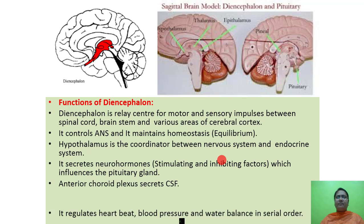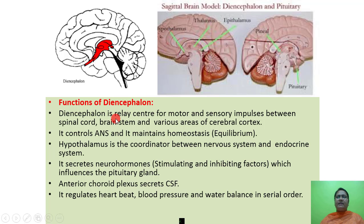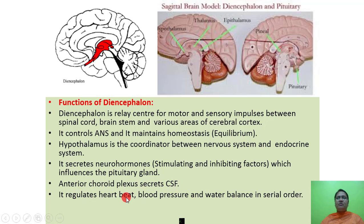Functions of the diencephalon: it is a relay center of motor and sensory impulses between the brain, spinal cord, brain stem and various areas of the cerebral cortex. It controls the autonomic nervous system (ANS) and maintains homeostasis. The hypothalamus is the coordinator between the nervous system and endocrine system, secreting neurohormones — stimulating and inhibiting factors — which influence the pituitary gland. The anterior choroid plexus secretes cerebrospinal fluid and it regulates heartbeat, blood pressure, and water balance.